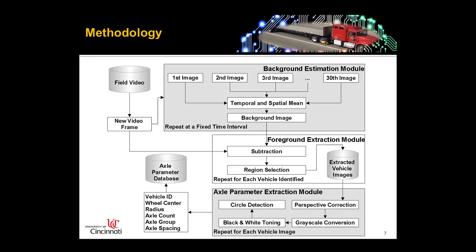The next model is the foreground extraction model. The purpose is to detect the vehicles. We take the targeted image and subtract the background image. Through other sub-models and iterative calculation, we identify the target vehicles.